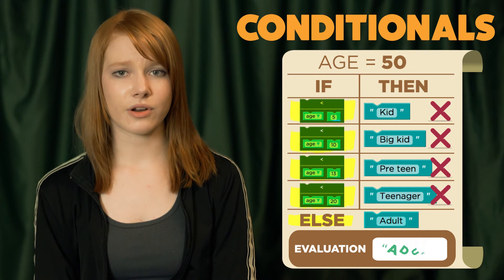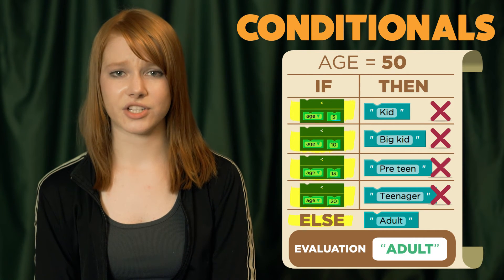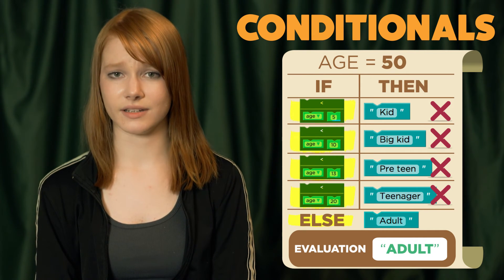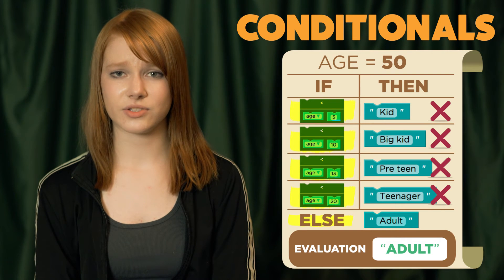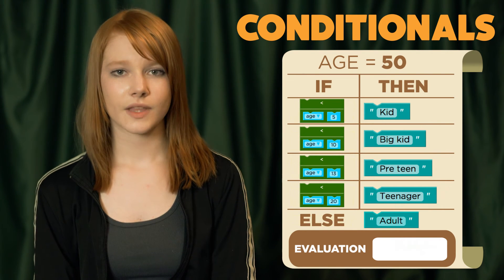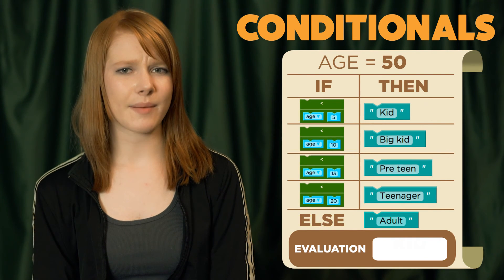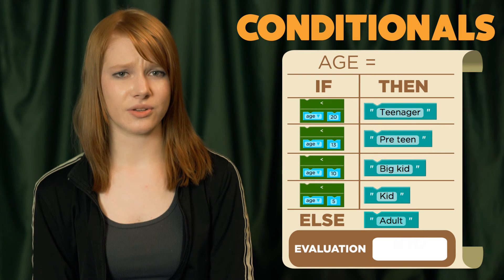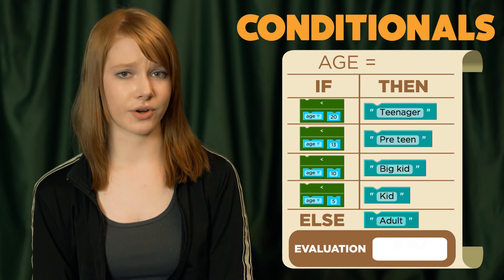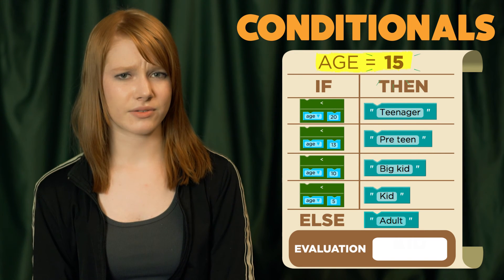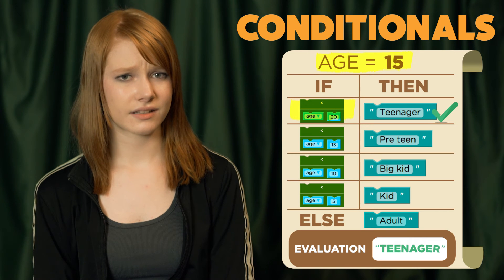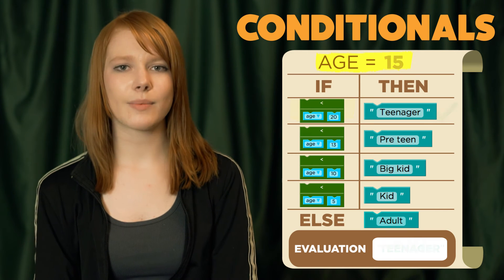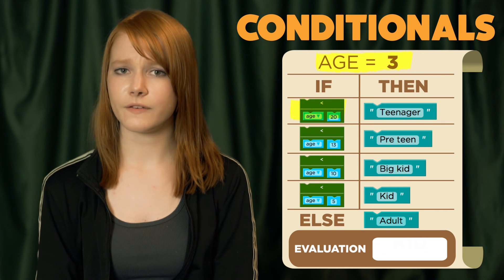The order in which you place your conditions is very important. The first condition that returns true is the one that wins. Let's look at what happens if we put our age checking conditionals in the reverse order. What would you expect it to return with age set to 15?